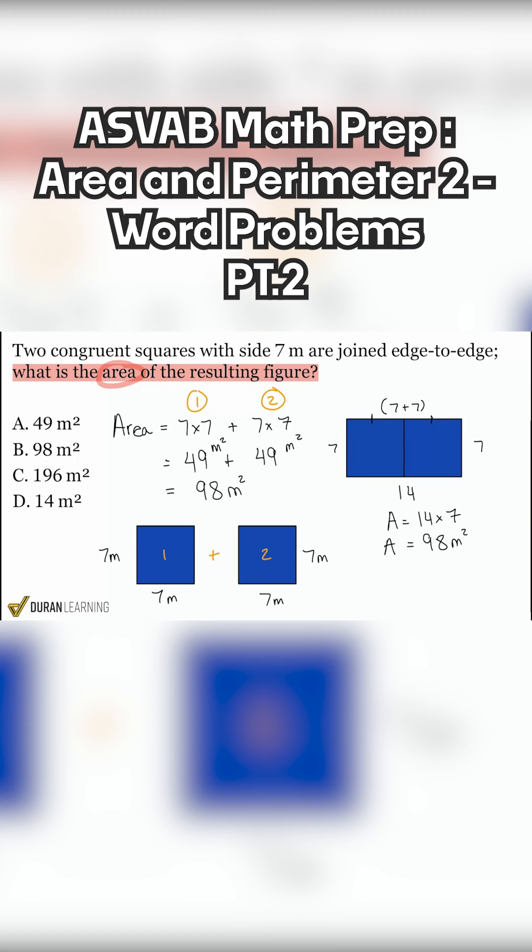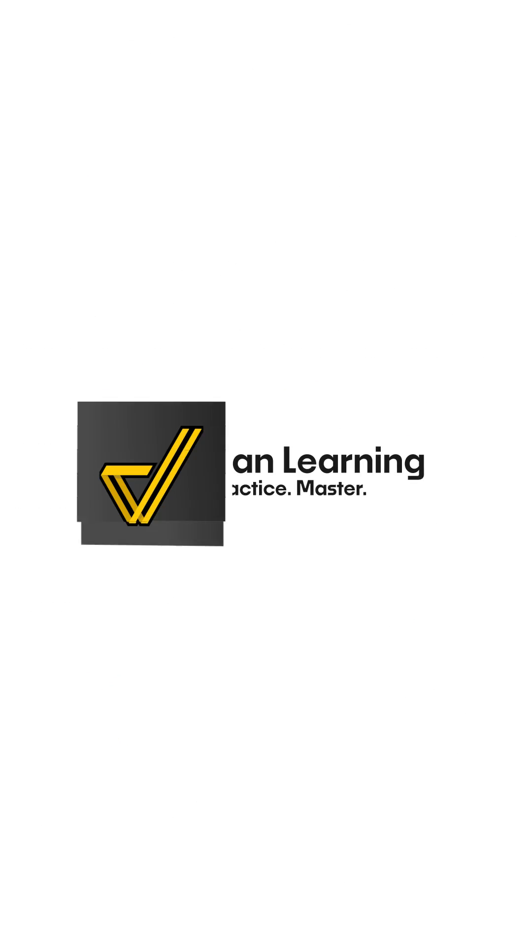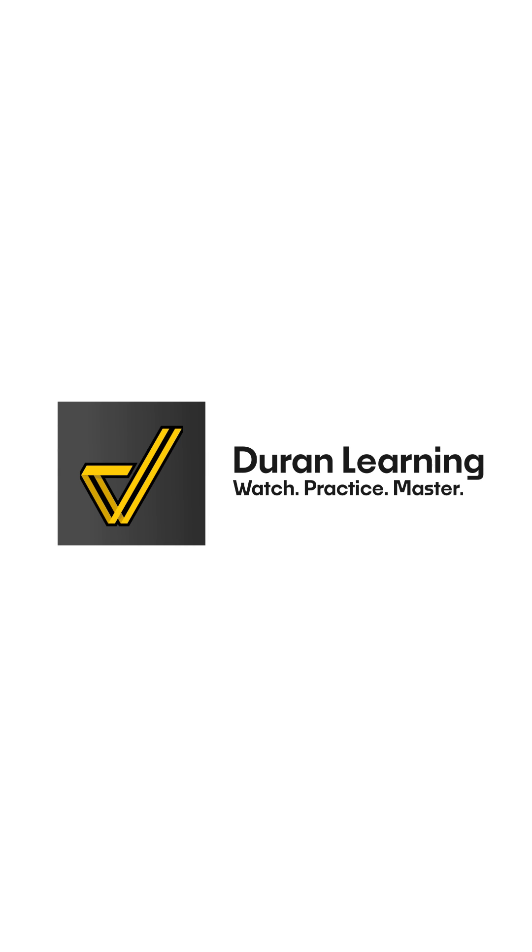Again, two different ways to do the same exact problem. Because in this question, hear me out, because we're looking for the combined area, we know that area is the space that we cover. So with that said, the space that we cover can be the sum, the addition of these spaces individually.